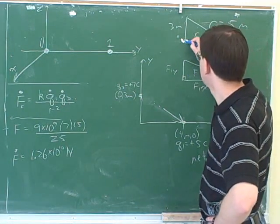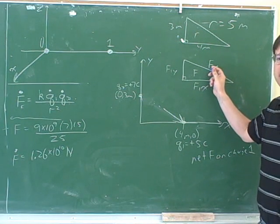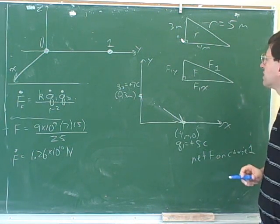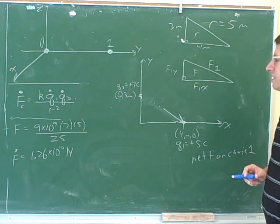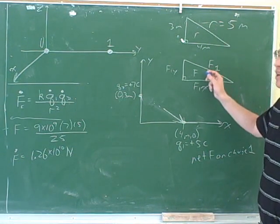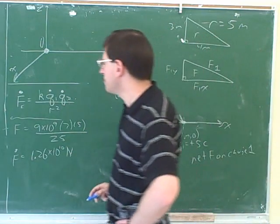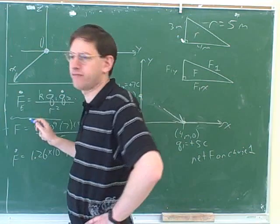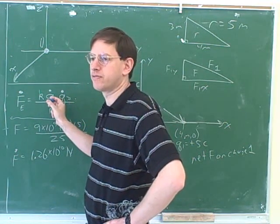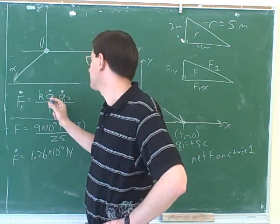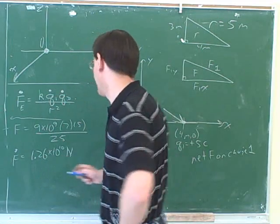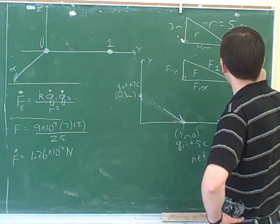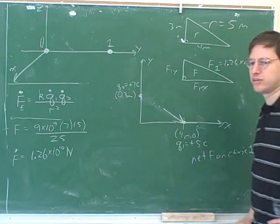This is a right triangle. Now we already know what the left side is. We don't want to confuse the distance triangle and the force triangle. One thing to keep in mind is that the Coulomb's law equation tells you the magnitude of the overall vector — not the components. That means it gives us the hypotenuse, not the legs. This hypotenuse is 1.26 times 10 to the 10th newtons.